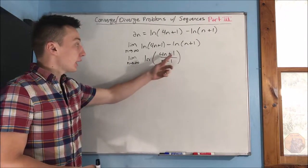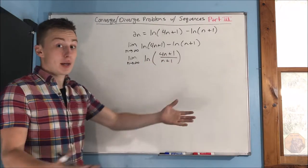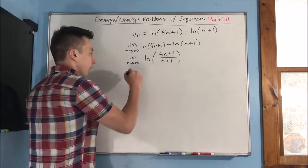If you divide everything by the highest power of n, which ends up just being dividing by n.